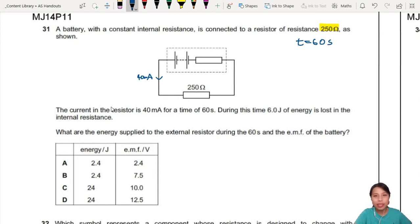That affects how much energy is being thrown out. During this time 6 joule energy is lost in internal resistance. So here because of the R you can say energy is lost as probably heat, 6 joules. What are the energies applied to external resistor? So what's the energy coming out here? The E during this 60 seconds and the EMF of the battery. So you need to find what is your EMF as well. Wow, it's got a lot of stuff to find. How do you start?